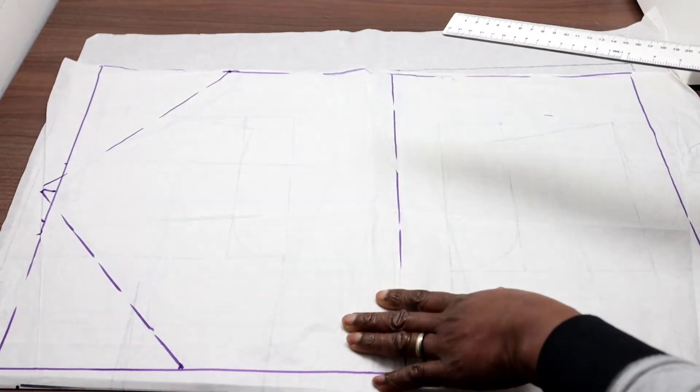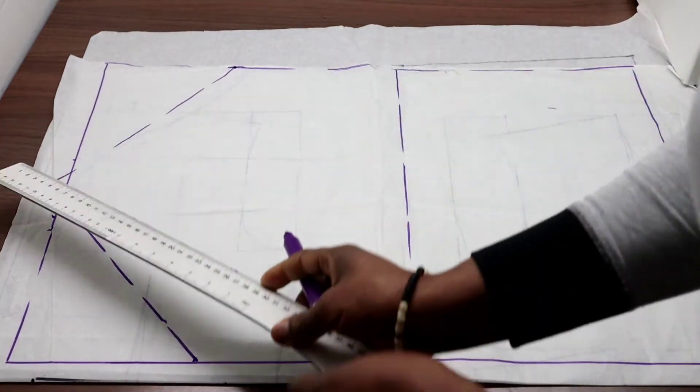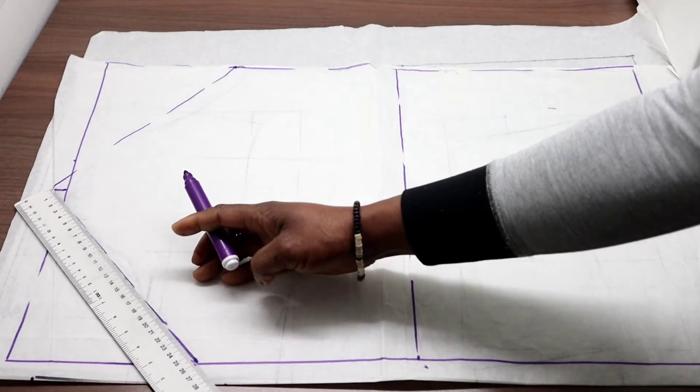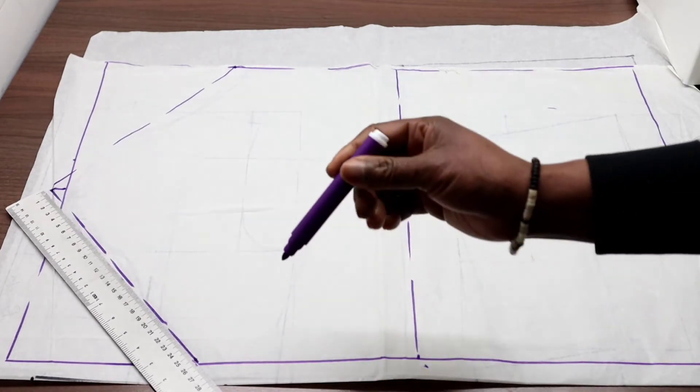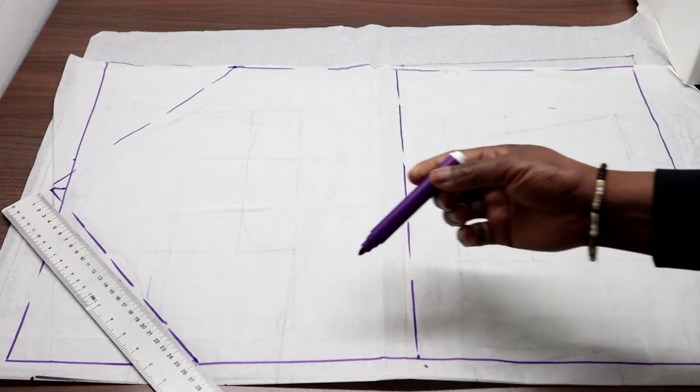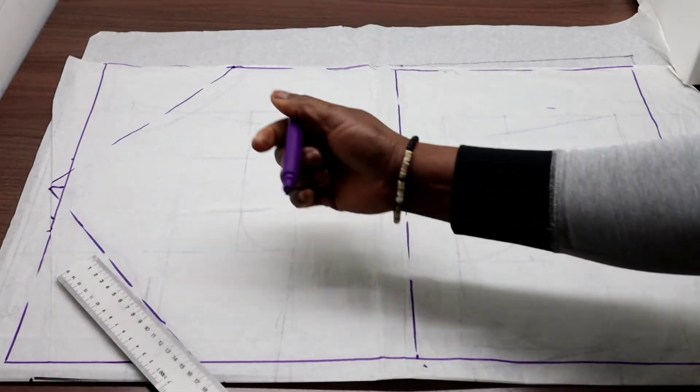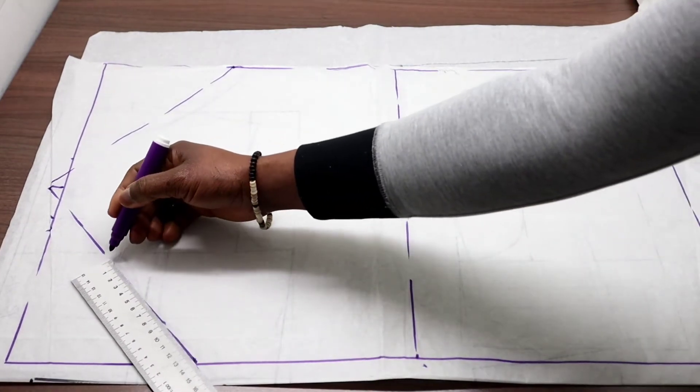So now we are going to determine these lines. Now this line here will be divided by 3 plus 2. Whatever you get, you make a point of it here. Just make a point.